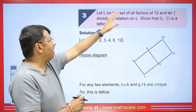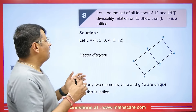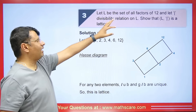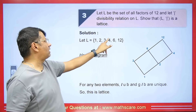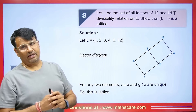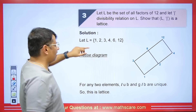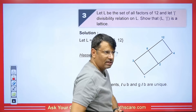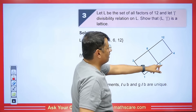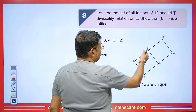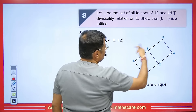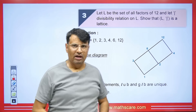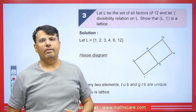Let L be the set of all factors of 12: {1, 2, 3, 4, 6, 12}. The divisibility relation is used. 1 divides 1, 2, 4, 3, 6, and 12. 2 divides 6, 4, and 12. 3 divides 6 and 12. 4 divides 12. And 12 divides 12. We draw the Hasse diagram. Taking elements 6 and 2: the upper bound is 12 (4 is not related to 6, so only 12 qualifies), giving a unique least upper bound of 12. The lower bound is 1 (3 doesn't relate to 2), which is unique.